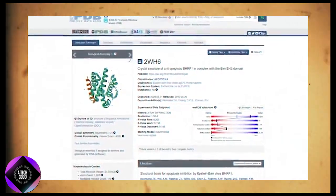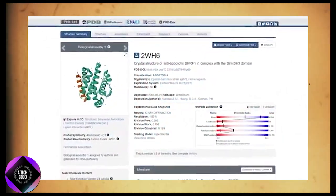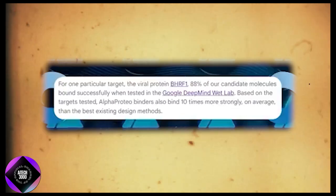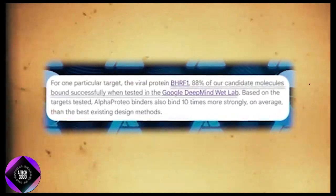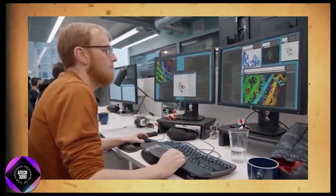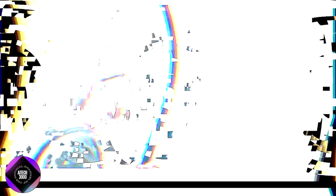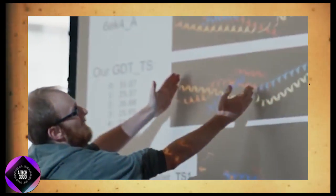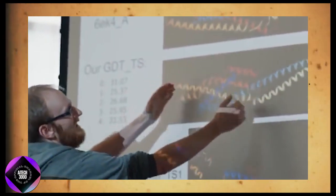It's not just a one-off success either. In another case, AlphaProteo designed binders for BHRF1, a viral protein, and 88% of its candidate binders successfully bound to the protein during lab tests. On average, these binders showed a 10 times stronger binding capacity than the best current designs.